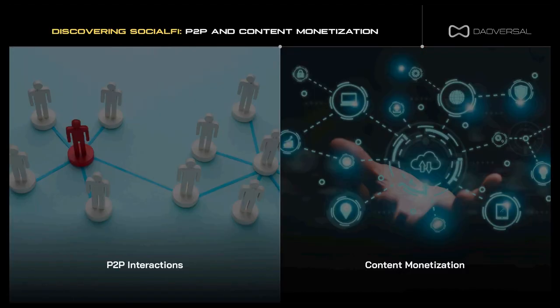Discovering deeper into SocialFi with peer-to-peer interactions, or P2P, and content monetization. Decentralized social networks are built on blockchain technology and operate without central authority or control. When we look at P2P interactions, decentralized social networks facilitate direct interactions between users without the need for intermediaries — in other words, middlemen. Users can connect, communicate, and share content directly with one another, fostering a more peer-to-peer and community-driven social experience.